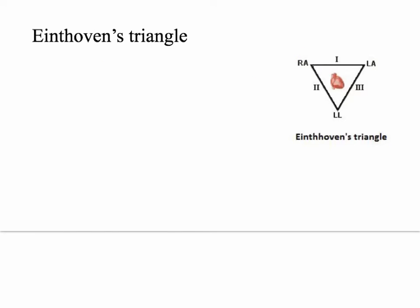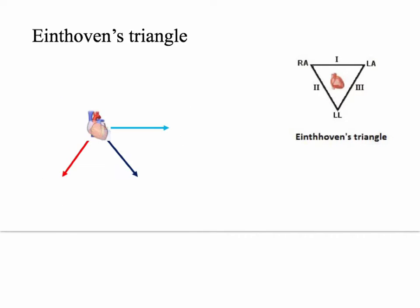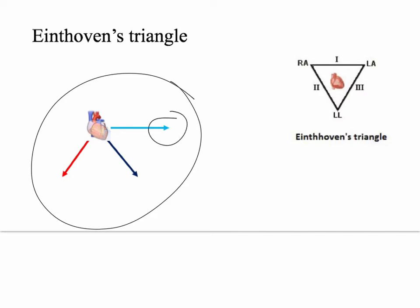We can monitor electrical movement in this vector — that's called lead one. Lead two would be from the right arm to the left foot, monitoring the electrical vector of the heart from that angle. We can also monitor the electrical vector from another angle. This triangle is called Einthoven's Triangle, because it's really important in understanding the EKG. Taking each of these lines and pushing them inward toward the heart, we end up with intersecting lines. We're looking toward the heart in different directions — here from the side, here from below. These are easy to remember because we label them clockwise: lead one, lead two, lead three.